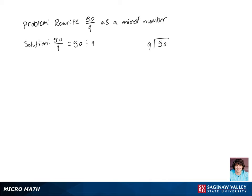Now let's do long division. 50 divided by 9. 9 goes into 50 five times.